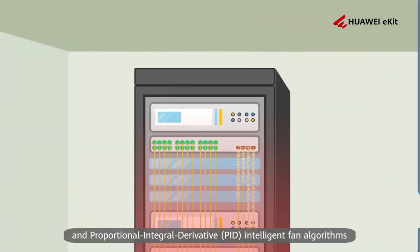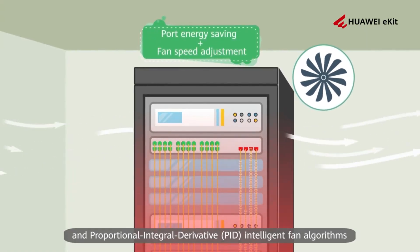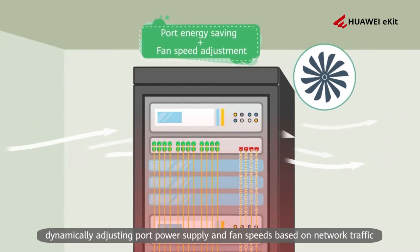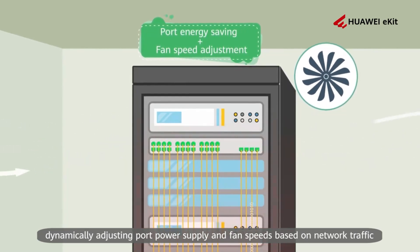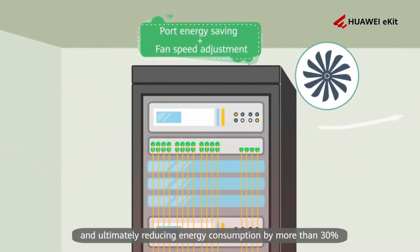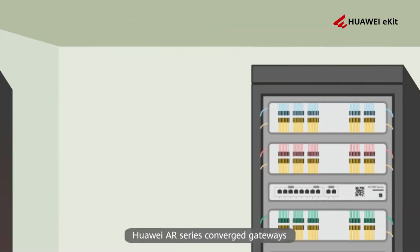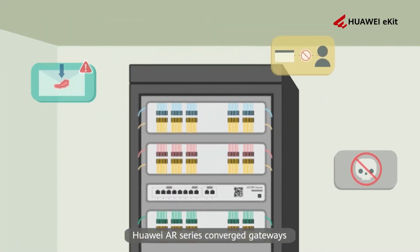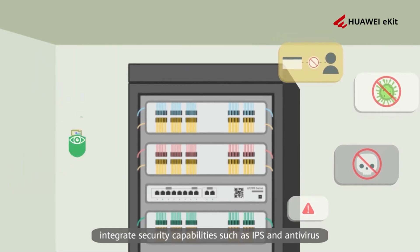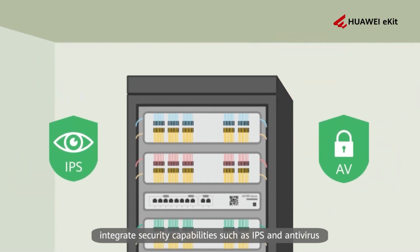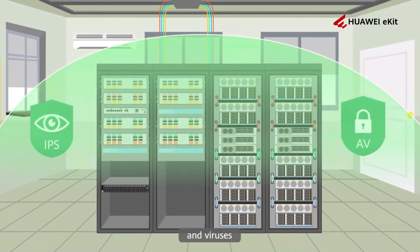Huawei eGit Engine Series switches feature proportional integral derivative (PID) intelligent fan algorithms, dynamically adjusting port power supply and fan speeds based on network traffic, ultimately reducing energy consumption by more than 30%. Huawei eGit Engine Series converged gateways integrate security capabilities such as IPS and antivirus, easily fending off Trojan horses, worms, and viruses.